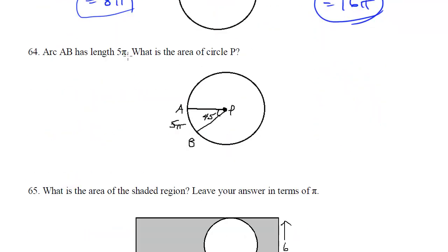What about the area? We know area is πr², so here it's π times 4², which is 16. So we get 16π, which is your answer. Arc AB has length 5π, what is the area of circle P? Well, we know that this wedge, which has an arc length of 5π, is 45 degrees.